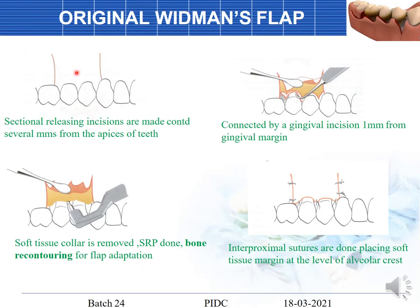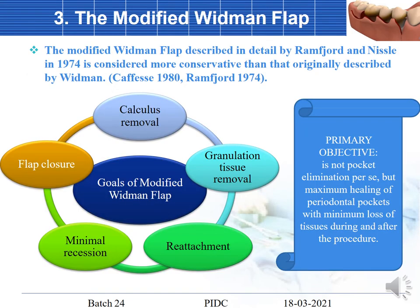For the original Widman flap, releasing incisions are placed several millimeters away from the teeth, connected by a gingival incision, and the flap is reflected high enough to allow osseous recontouring before suturing back. The modified Widman flap, described by Ramfjord and Nissle, is more conservative. Its goals include calculus removal, granulation tissue removal, reattachment, minimal recession, and flap closure.